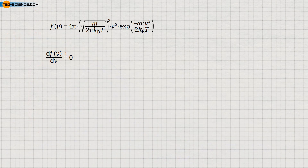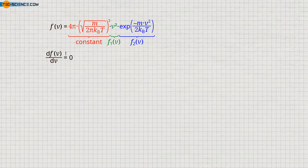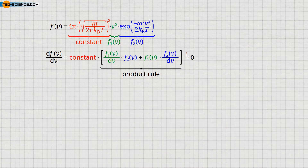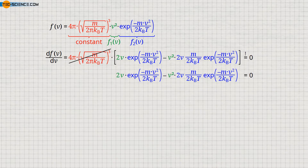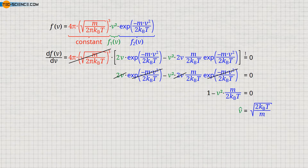Mathematically, this most probable speed can be determined by setting the first derivative of the Maxwell-Boltzmann distribution equal to zero. To solve this equation we use the product rule. The term marked in red is to be considered as a constant, while the terms marked in green and blue are our two functions. If we now apply the product rule, we get the following equation. We now solve this equation with respect to the speed by dividing the equation by the constant term marked in red, and we can cancel out both the exponential term and the term 2V. In this way we finally get the given formula for the calculation of the most probable speed.